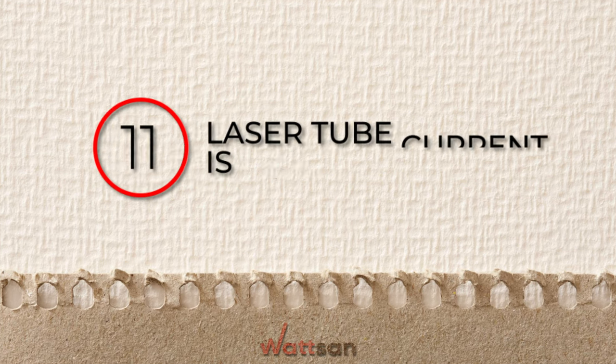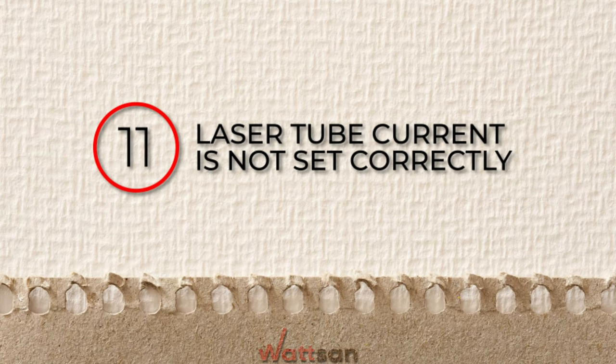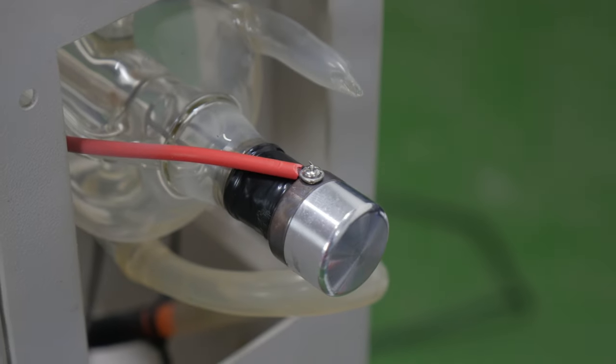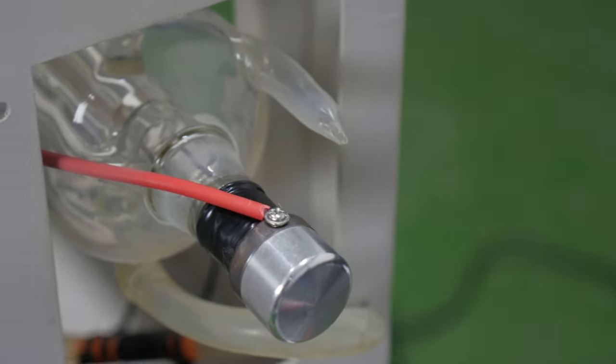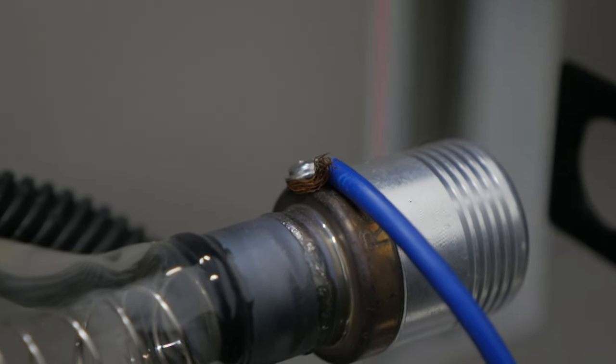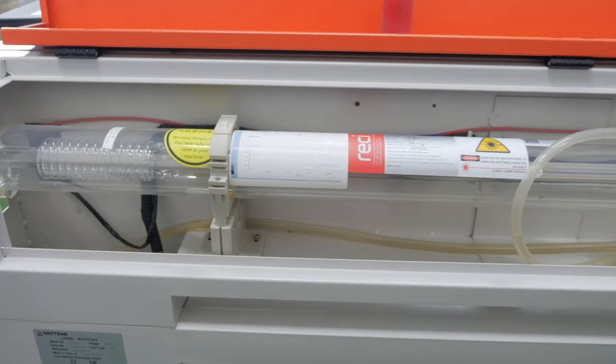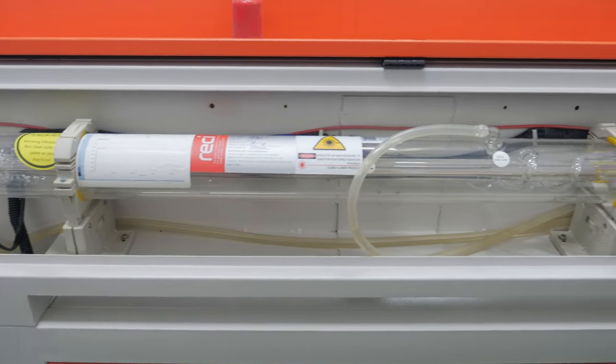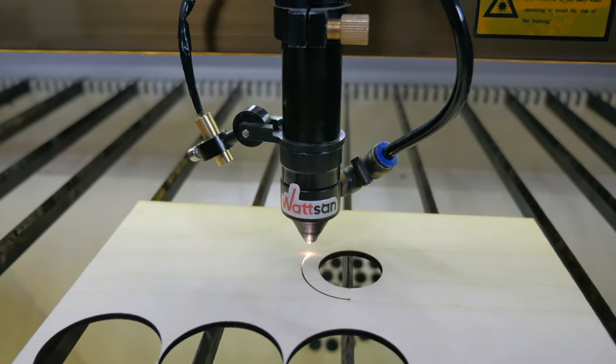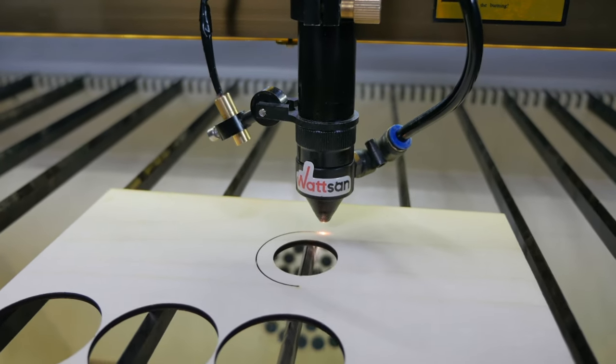11. Laser tube current is not set correctly. If the current is too high, the electrodes of the laser tube overheat, the power subsides, and the tube fails after about three months. And if the current is too low, you will not use the power resource built into the tube. For more details, see one of our videos. The link is in the description below this video.